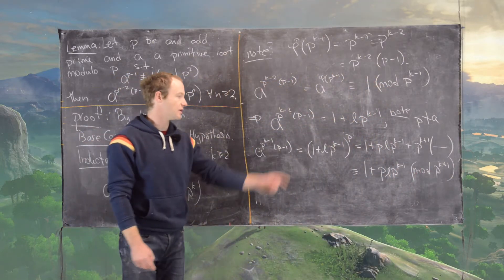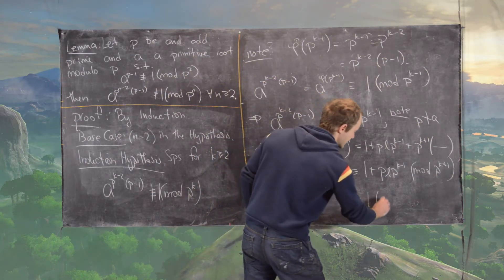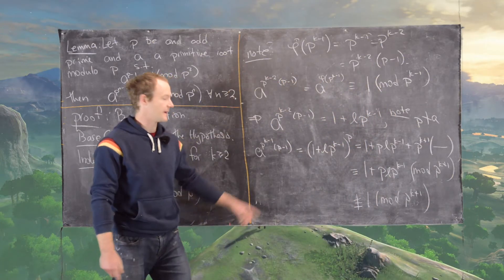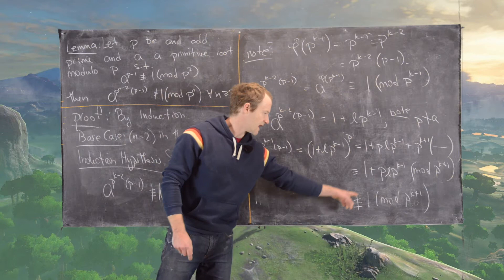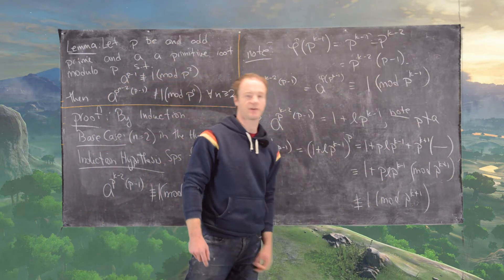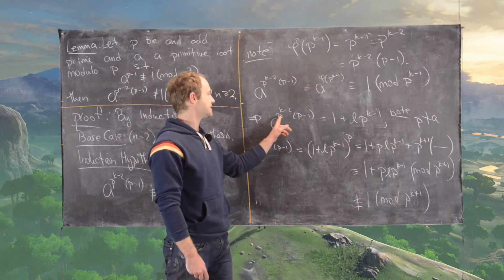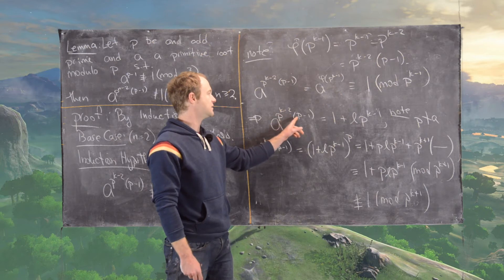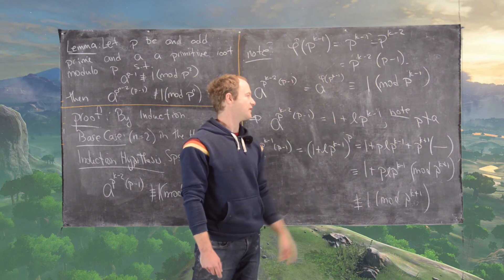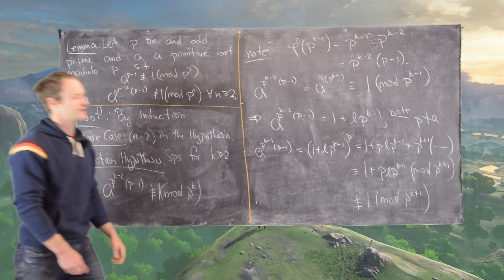Notice that this is not congruent to 1 modulo p to the k plus 1. We know that because p cannot divide l. Because if p does divide l, then we can write a to the p to the k minus 2 times p minus 1 equals 1 plus a multiple of p to the k, which would contradict the original assumption. And that finishes the proof.